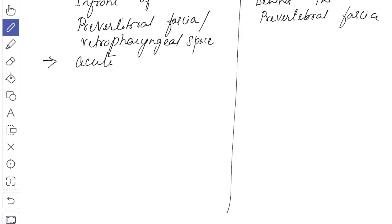A swelling behind the pre-vertebral fascia is due to chronic infections like tuberculosis of the cervical vertebrae, also known as cervical caries.